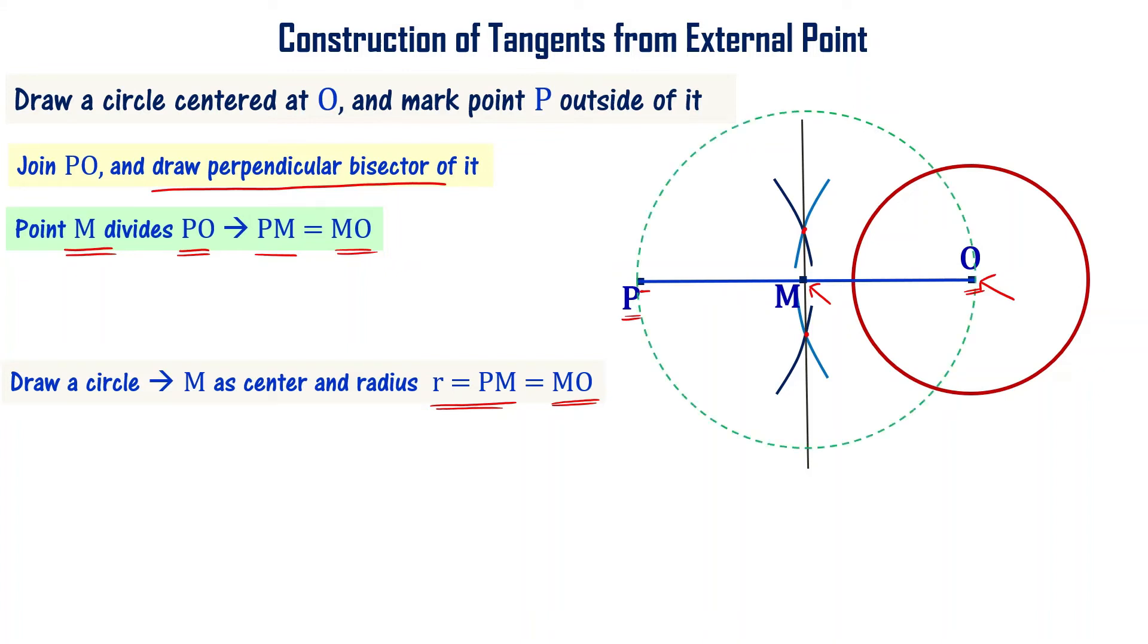You can see the original circle intersects. The two points are A and B. A is here, B is here.